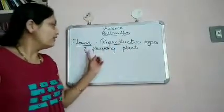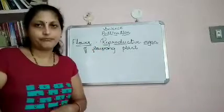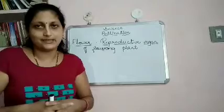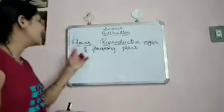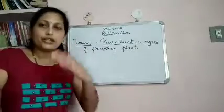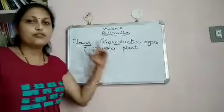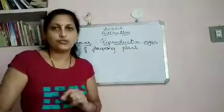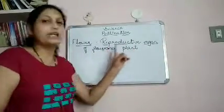Plants are able to reproduce with the help of flowers. In order for sexual reproduction to take place, there must be some organs. That organ is nothing but the flower. So flowers are the reproductive organ of a flowering plant — we can define a flower as the reproductive organ of a flowering plant.